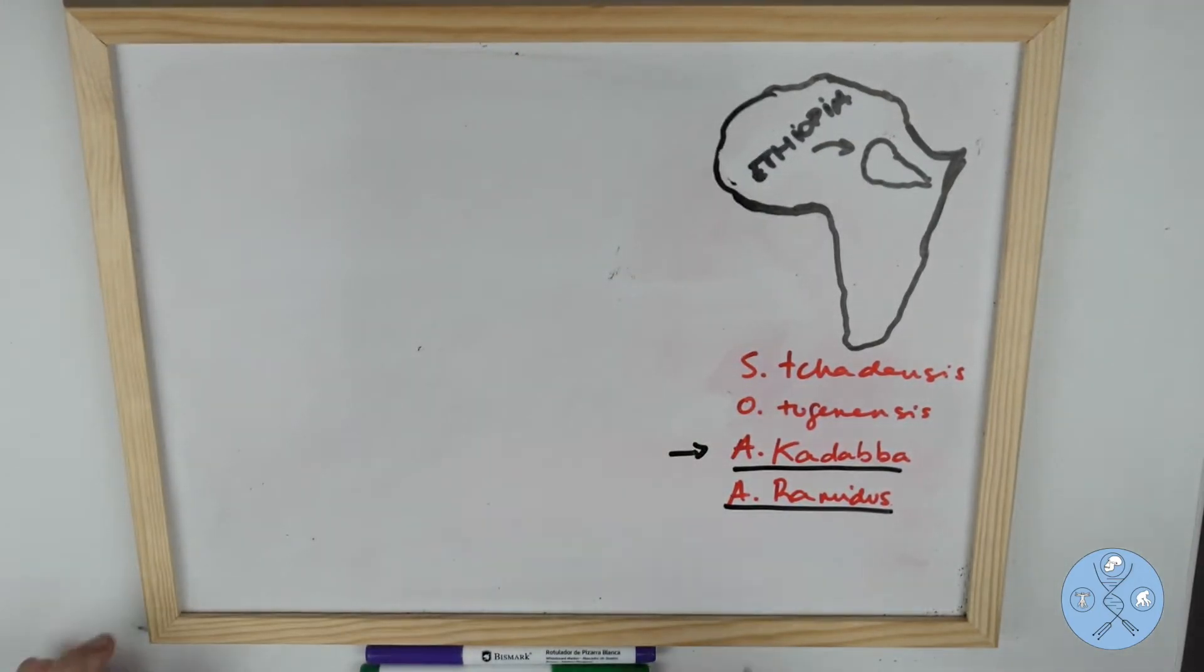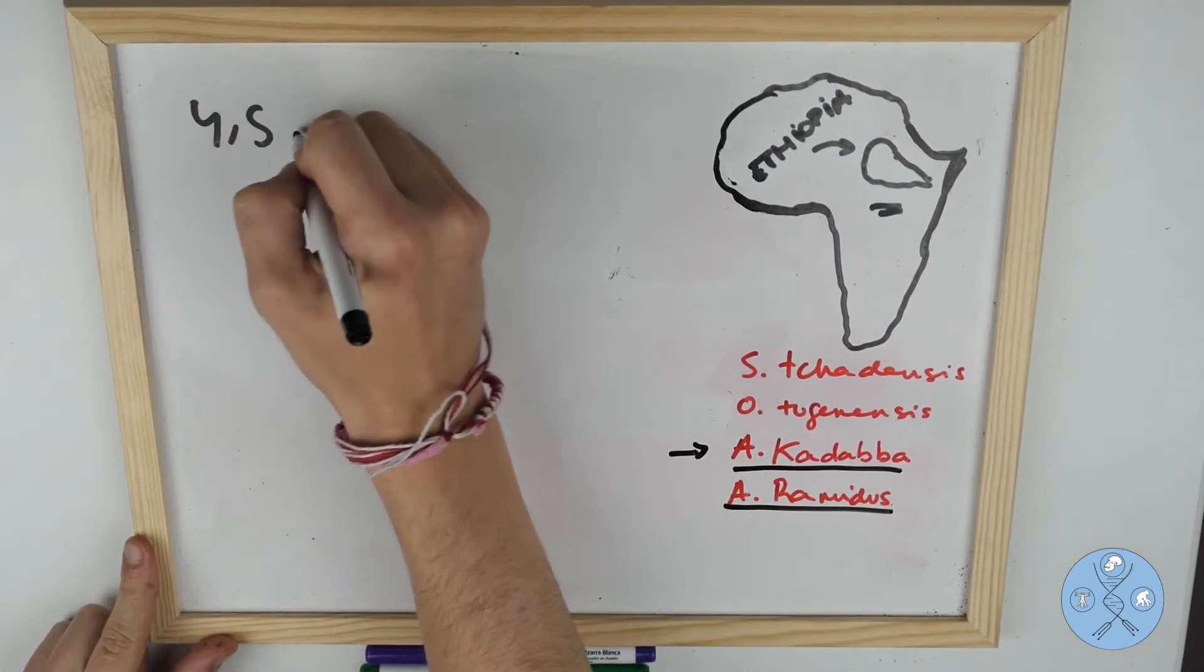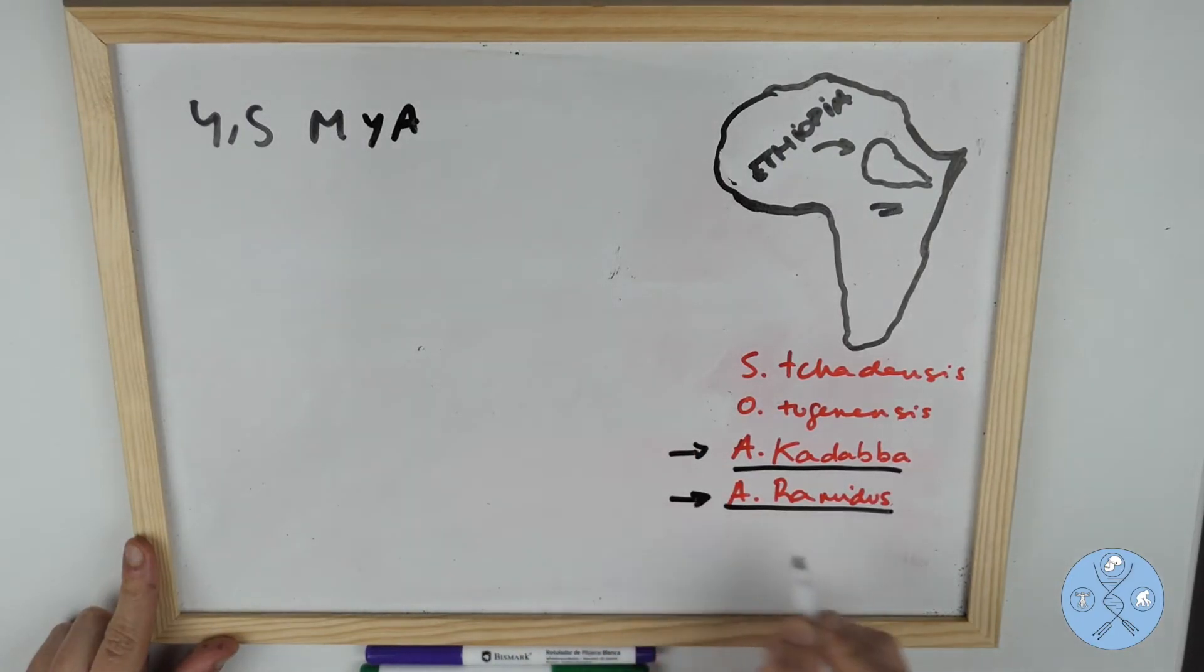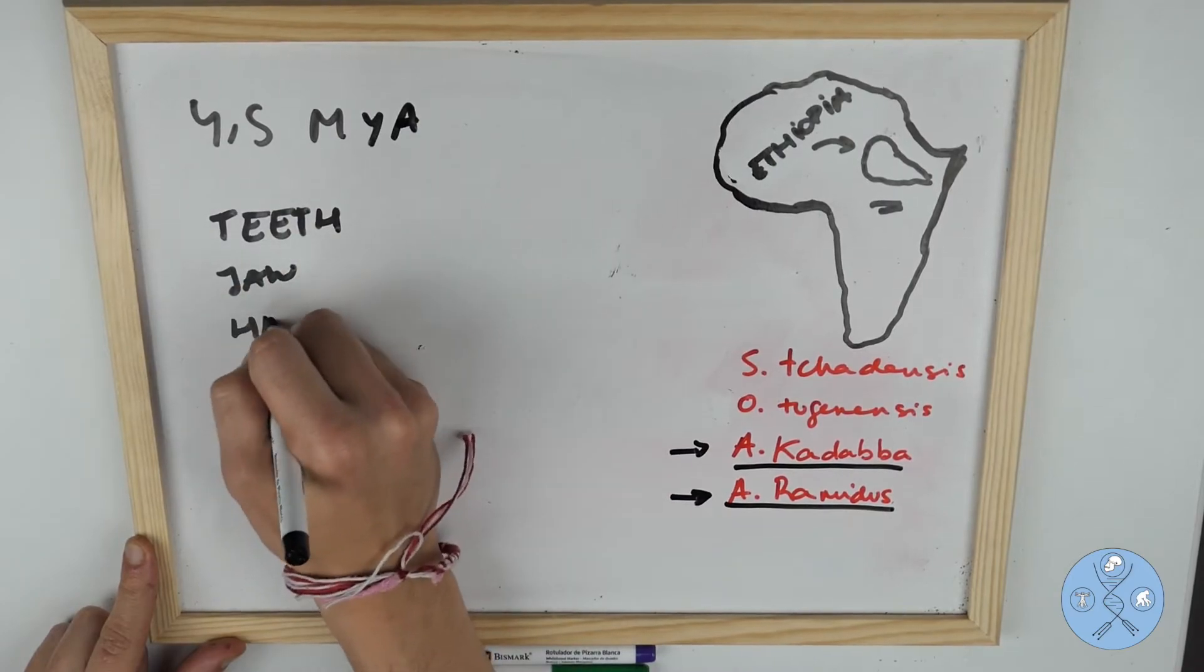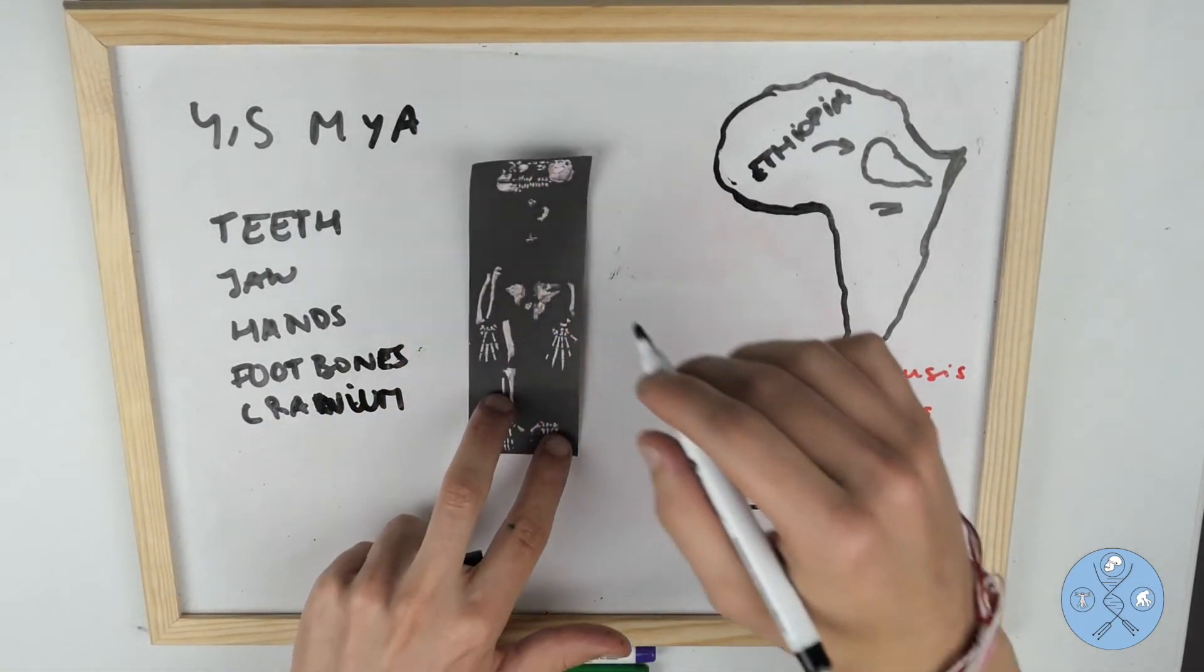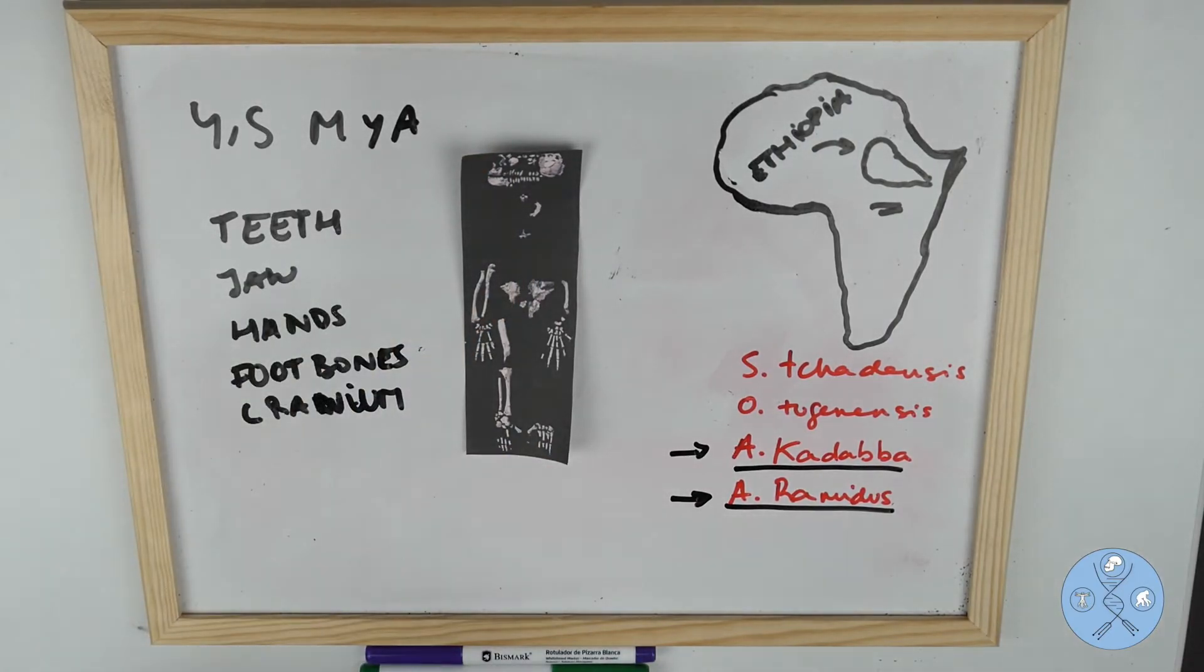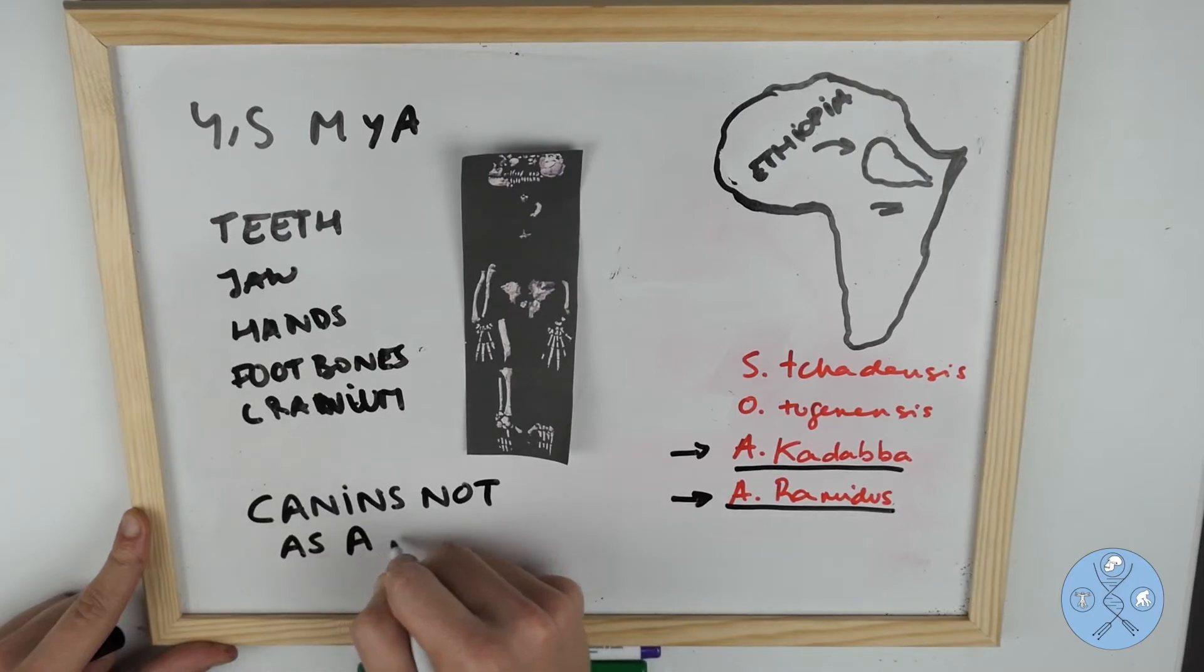The second collection of Ardipithecus fossils comes from the Middle Awash and Gona regions of Ethiopia. They date from around 4.5 million years ago and they may have persisted to around 4 million years ago. The fossil collection includes teeth, parts of several jaws, some small hands and foot bones and part of the underside of a cranium. It is assigned to the genus Ardipithecus but in a separate species called Ardipithecus ramidus because its discoverers think that its canines are less ape-like than those of Ardipithecus kadabba.